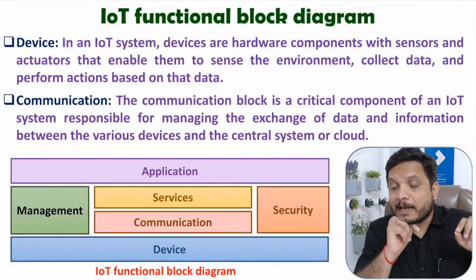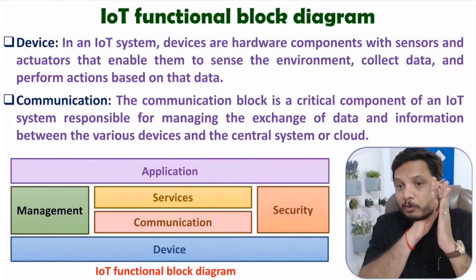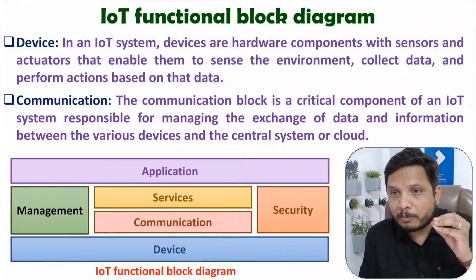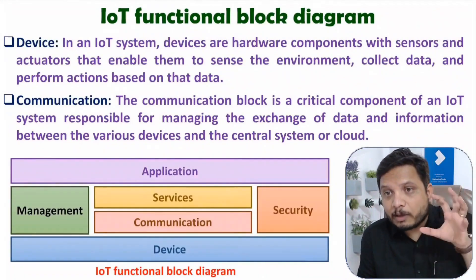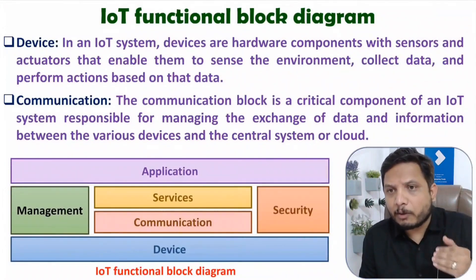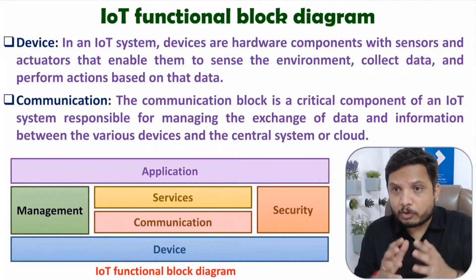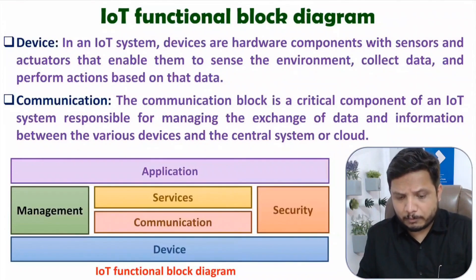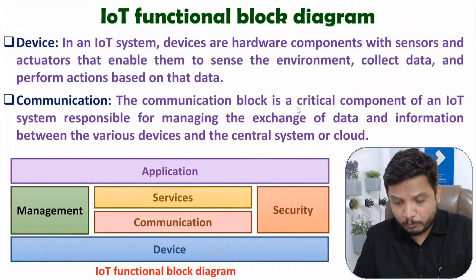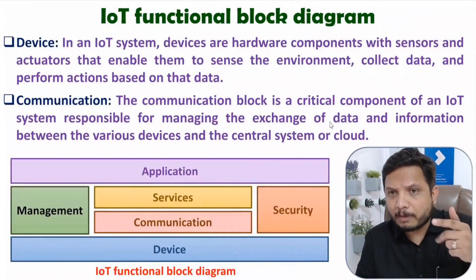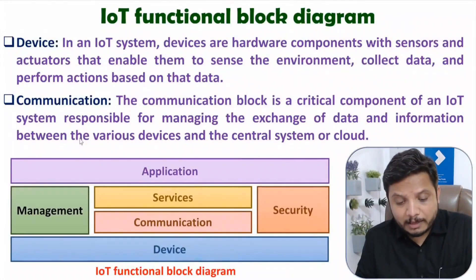After that, the router will send that data to the internet. Router-to-router communication will take place using internet protocols — IP protocols, which could be IPv4 or IPv6. For a small wireless area network, various protocols are available in the IoT ecosystem, which includes Zigbee, 6LoWPAN, Wi-Fi, and Bluetooth protocols. The communication block is a critical component of an IoT system, responsible for managing the exchange of data and information between various devices and the central system based on protocols.